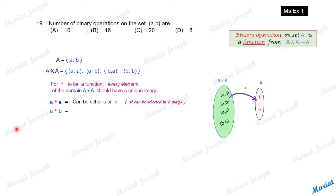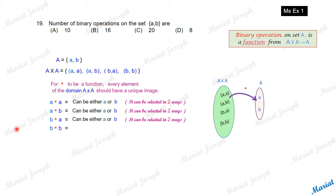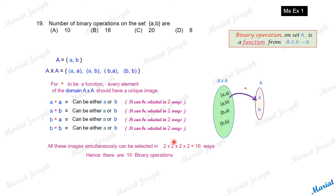Same with A star B — it can be either A or B, so it can also be done in two ways. B star A can be selected in two ways. B star B — the result can be either A or B, so again in two ways. But to write the function, all these selections should be done simultaneously. So all these images simultaneously can be selected in 2 × 2 × 2 × 2, that is, 16 ways.